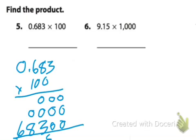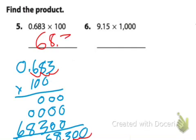So we add these up and we get 68,300, but we need to move the decimal over 3 times: 1, 2, 3. So the answer is 68.3.